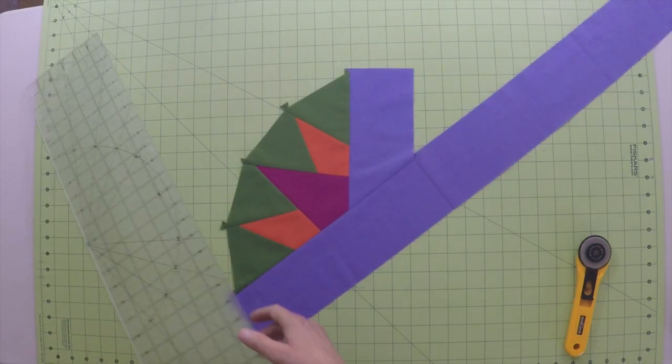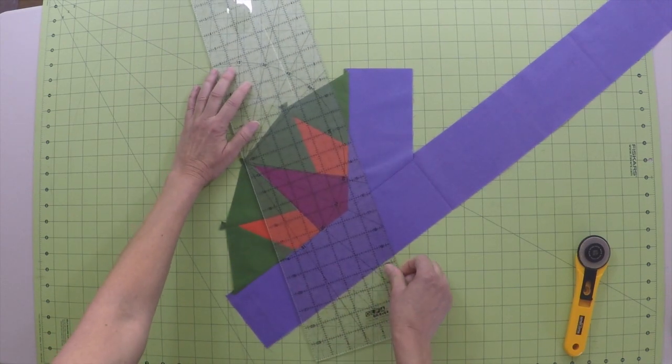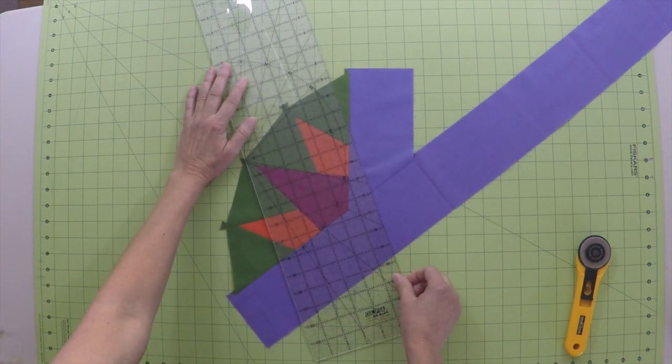Now you are ready to trim your unit into a quarter compass. Start by lining up the 45 degree line through the middle of point 2.